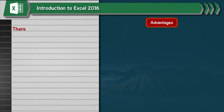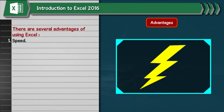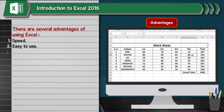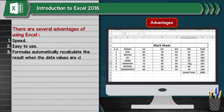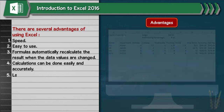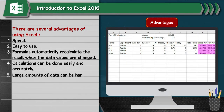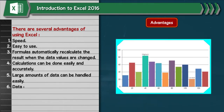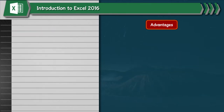Advantages: There are several advantages of using Excel. 1. Speed, 2. Easy to use, 3. Formulas automatically recalculate the result when the data values are changed, 4. Calculations can be done easily and accurately, 5. Large amounts of data can be handled easily, 6. Data can be presented graphically through various charts and graphs.